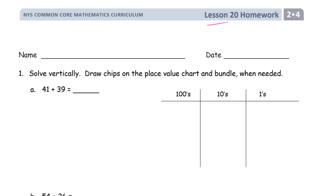Welcome to homework for lesson 20. This is module 4 of lesson 2. Get your name on here first — it's going to be the easiest one for you to do, so don't skip it. We're practicing vertical addition. I'll go over briefly the kinds of mistakes that tend to get made, and at the end there's a question where you have to figure out a mistake that somebody made.